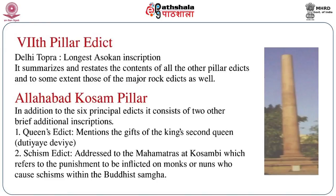The Allahabad Kossam pillar of Ashoka is another very interesting inscription. In addition to the six principal edicts, it consists of two other brief additional inscriptions. One is known as the Queen's Edict, where the gift of King's second queen Duthiaye Deviye is mentioned — a donative record of the queen. The other is the Schism Edict, addressed to the Mahamatras at Kaushambi, which refers to the punishment to be inflicted on monks or nuns who cause schism within the Buddhist Sangha.